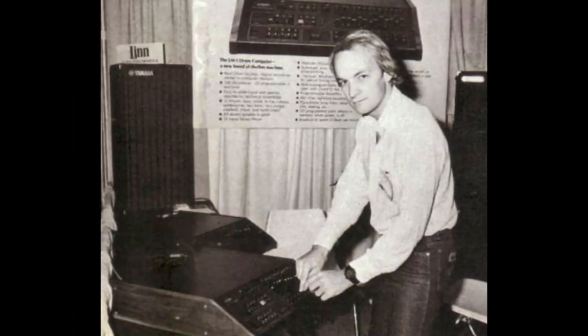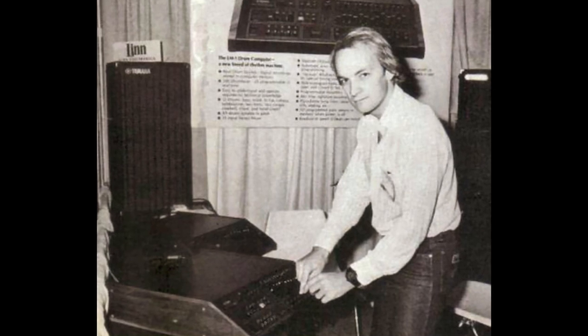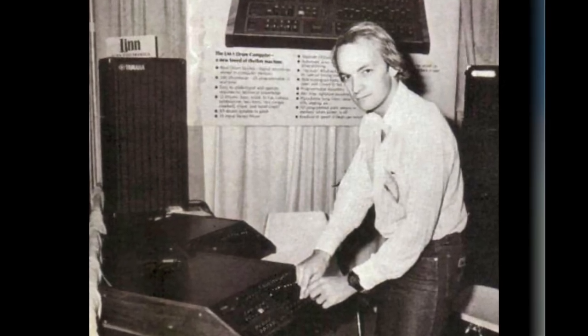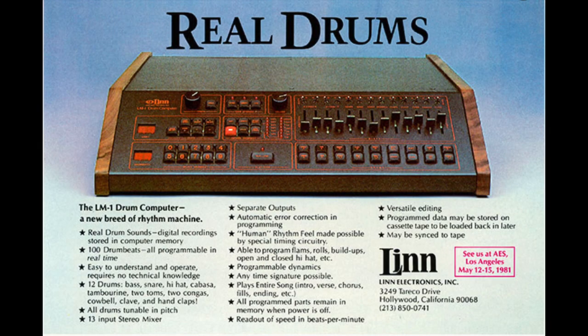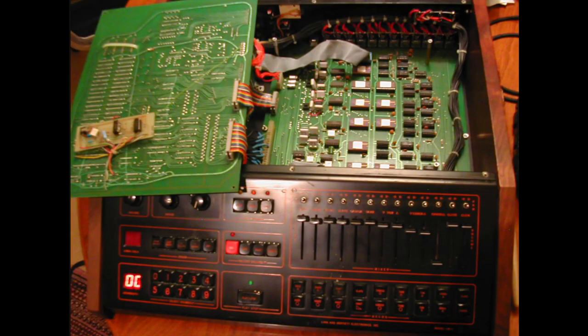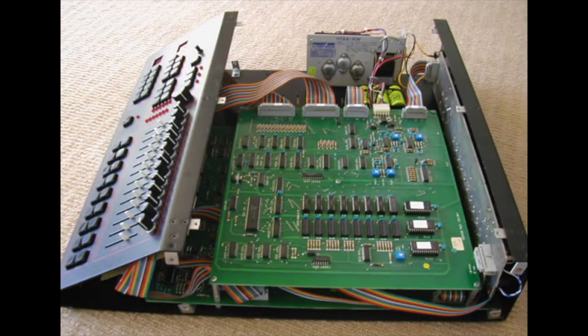In 1980, shortly after the Fairlight release, Roger Linn applied the same principles to the Linn LM1 drum machine, where drum samples were stored in permanent digital memory on EEPROMs and then played back as needed when a button was pressed or the sequence triggered the required sample located at that specific memory location.